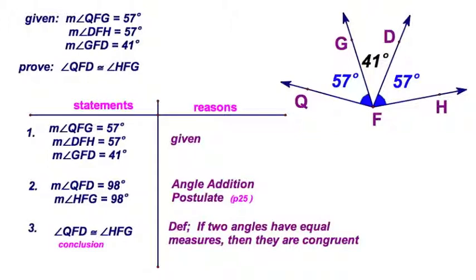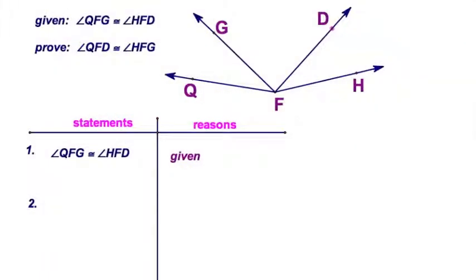Notice the direction that we write it. We know all definitions are bi-directional or bi-conditional. However, we're starting with angles of equal measure and we're concluding that the angles are congruent. Therefore, we write it in this direction: if two angles have equal measures, then they are congruent.